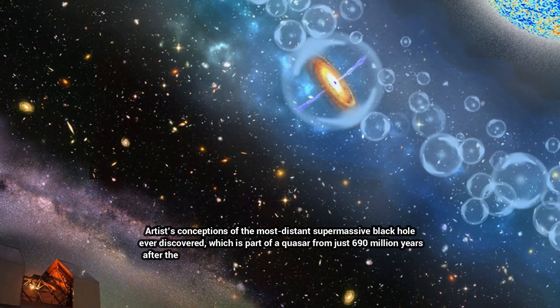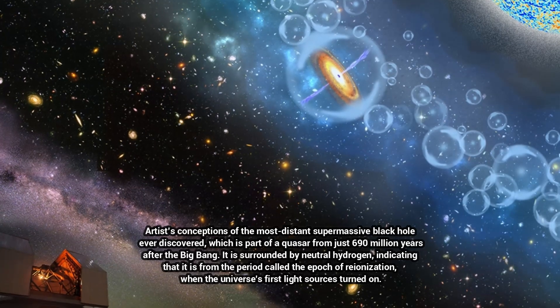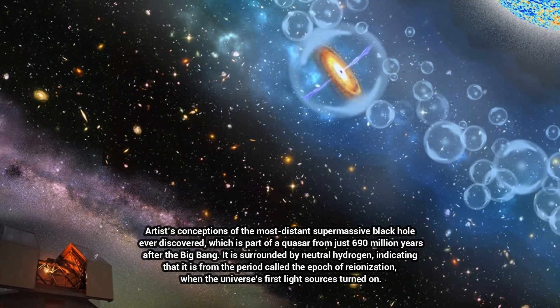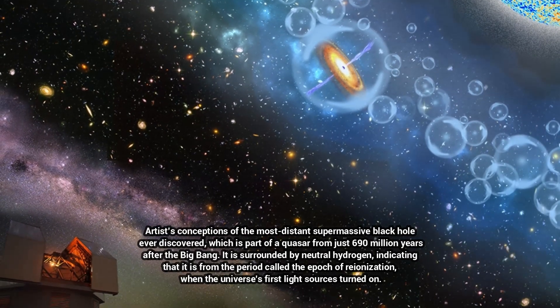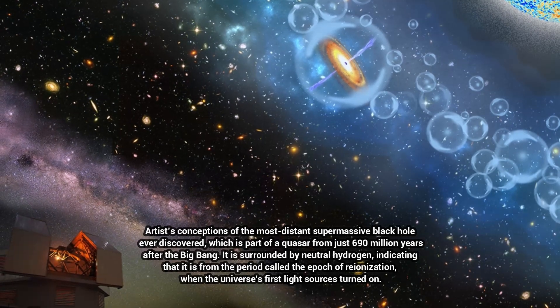When two black holes collide, they merge into one bigger black hole and ring like a struck bell, sending out ripples in space and time called gravitational waves.